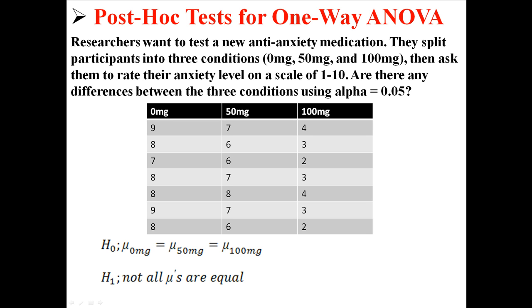I had researchers who wanted to test a new anti-anxiety medication. So we had three groups: 0mg, 50mg, and 100mg, and we measured anxiety scores. We were going to test the hypothesis that not all means were equal. We tested to see if there was a difference somewhere between those three groups.